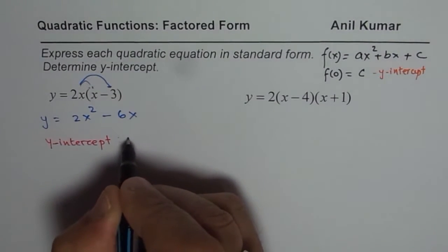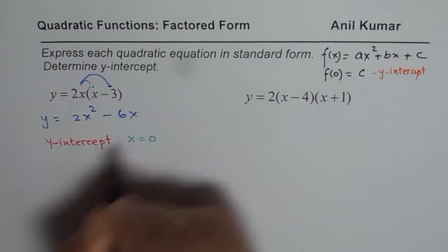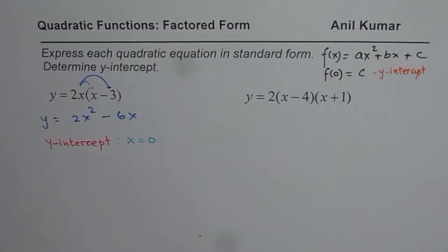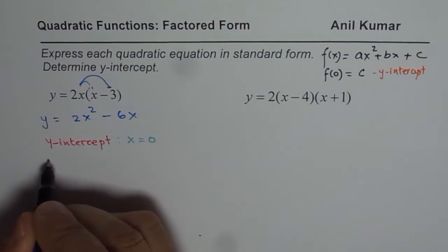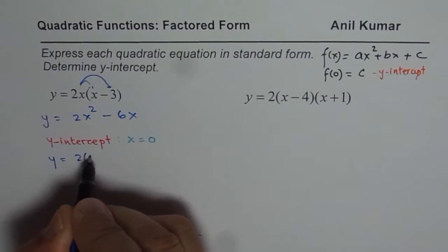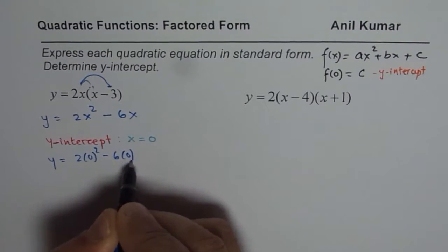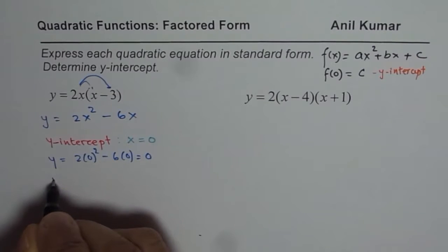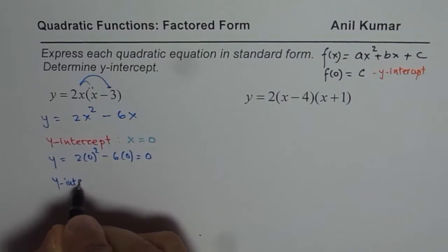So y-intercept means x = 0 and we need to find the value of y. So if I write x as 0, I get y = 2(0)² - 6(0), that is 0. So we say y-intercept is 0.